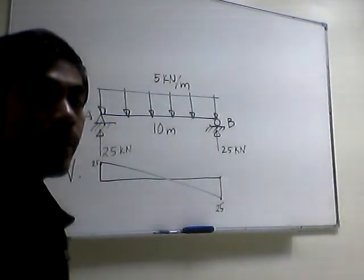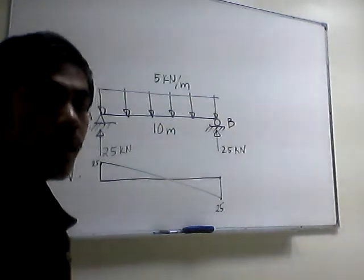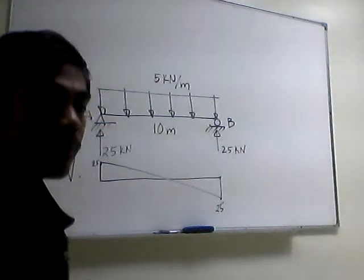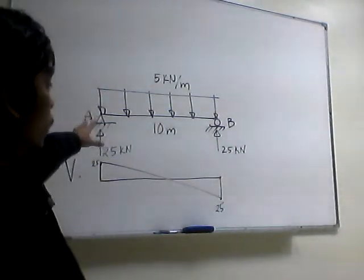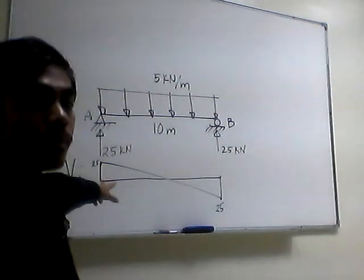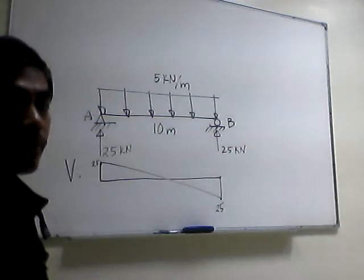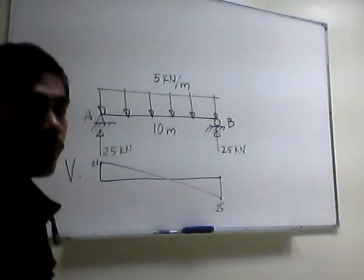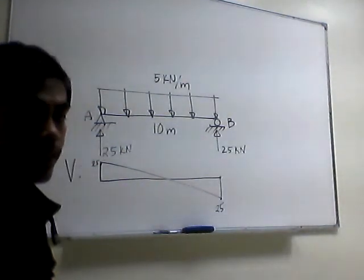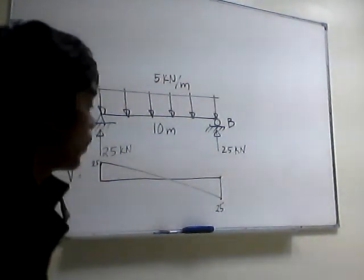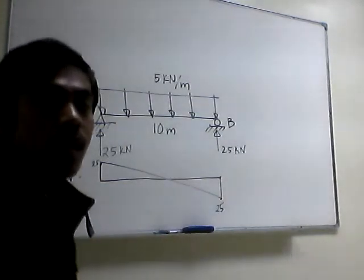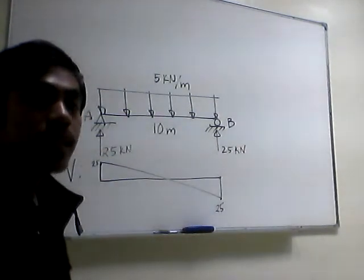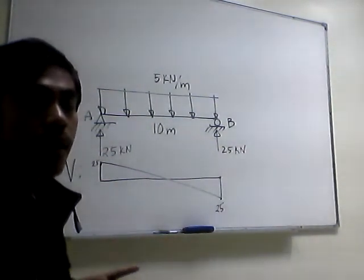Notice that in the shear diagram, the shape is a triangle — unlike in the beam loaded with concentrated load, where the shear diagram is of rectangular shape. Because the shear diagram is triangular, the moment diagram will be of the shape of a curve. We are going to use the area of the shear diagram to get the values of the moment along the beam.